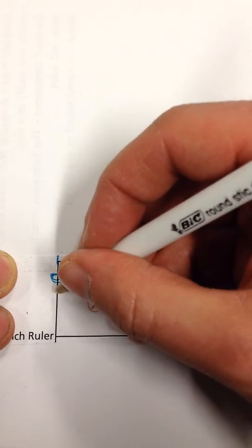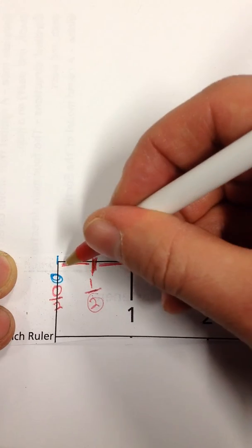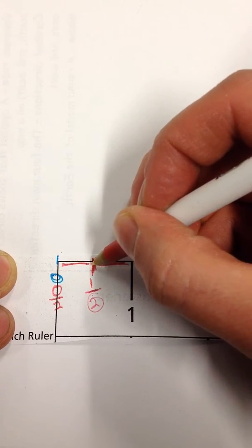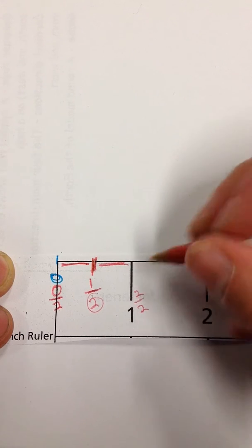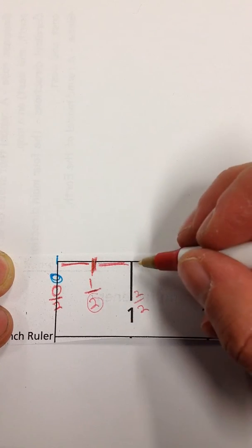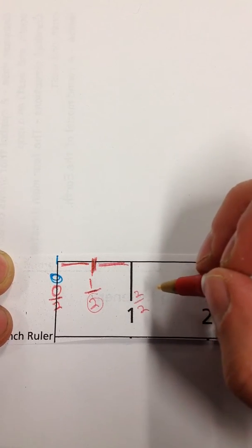Another way to say it would be, this is zero halves right here. You haven't gone anywhere yet. This is one half. You're halfway to the inch. And this is two halves. That's right. Another way of saying one inch is two halves of an inch.